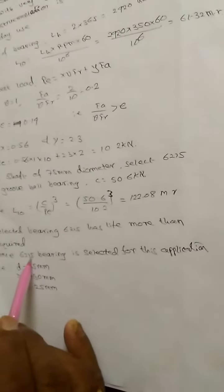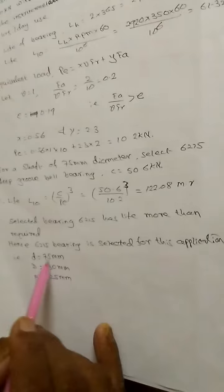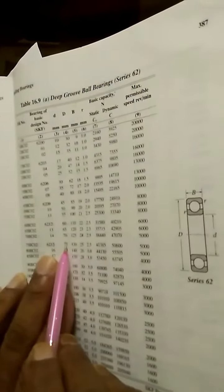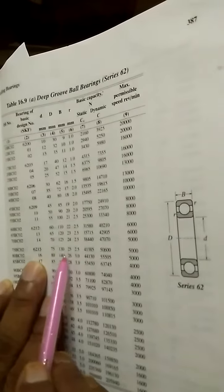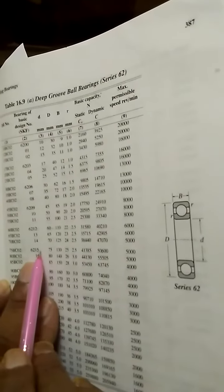And you can mention here what is the bearing number and what are the sizes here. These sizes you are getting from here. The 75mm bore diameter, 130mm outer diameter, 25mm width for 6215 bearing. Thank you.